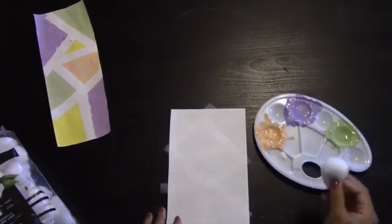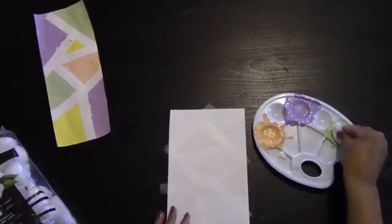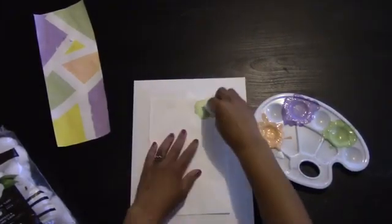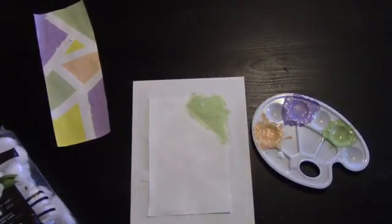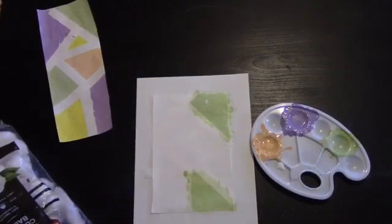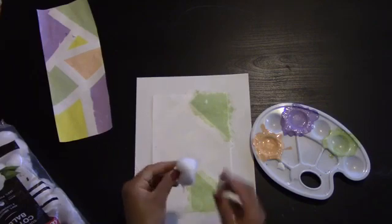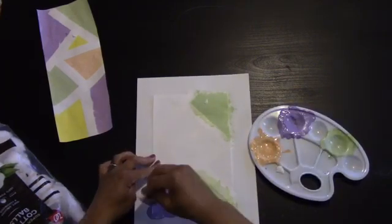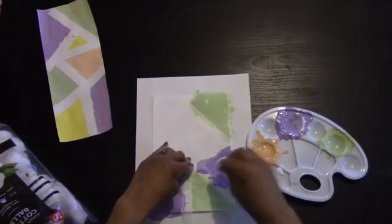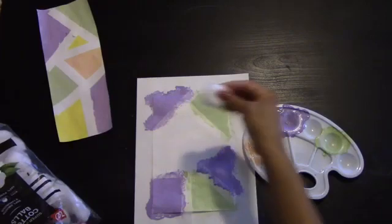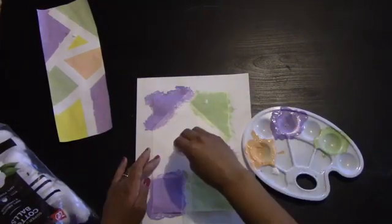Next we're going to take a cotton ball and you can add something underneath so that you don't get any paint on your table and begin dabbing on the paint in each section. Go ahead and get a different color and apply that to a section. And you keep doing so with all the colors until the piece of paper is completely painted.